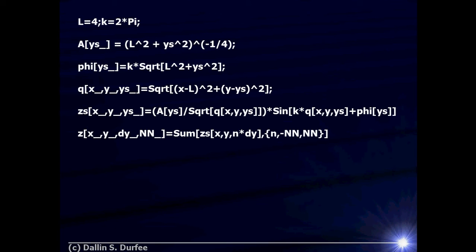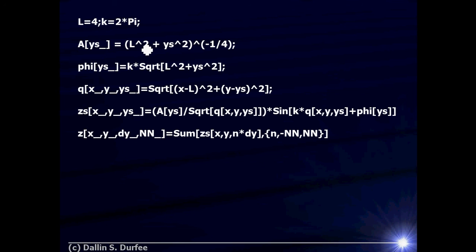Here's the Mathematica code I wrote. First I define L equal to 4, and the wave number k — since the wavelength is 1 meter, k is just 2π radians per meter. I'm going to forget about time and just plot these waves at time t equals 0 to see what the wave crests look like. The amplitude of each source is the amplitude of the wave from the cork, which drops off with the distance from the cork as 1 over (L² + Y²) to the 1/4 power.